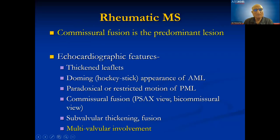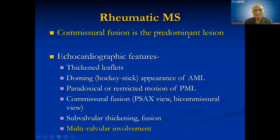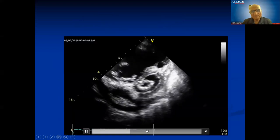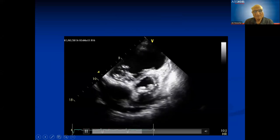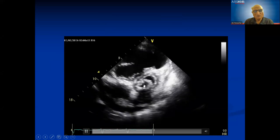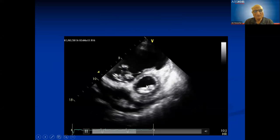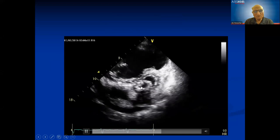The commonest cause of mitral stenosis is rheumatic mitral stenosis, characterized by fusion of the commissures — that is why in balloon valvotomy we split the commissures. Whenever there is multi-valve involvement it is more suggestive of rheumatic etiology. On the short axis view at mitral valve level, you can see the commissures are fused and very narrowed.